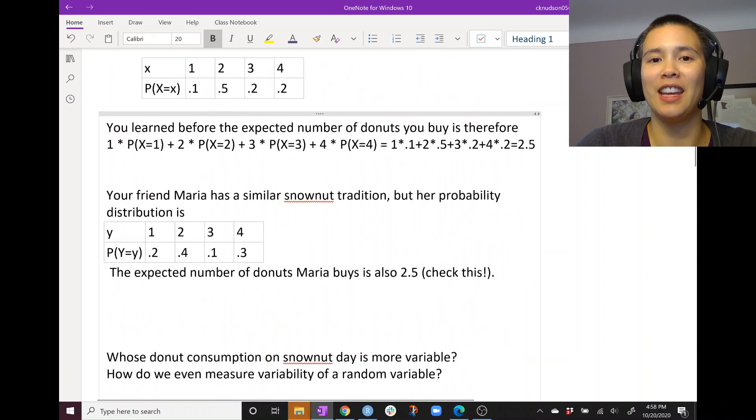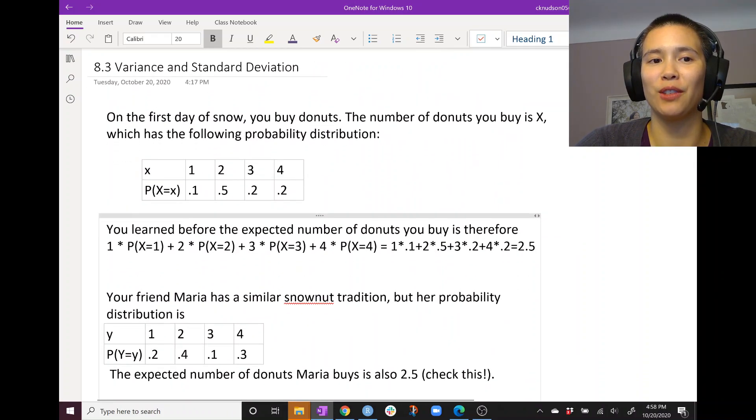All right, so that is standard deviation and variance for you. Remember, if you have variance, just take the square root to get standard deviation.